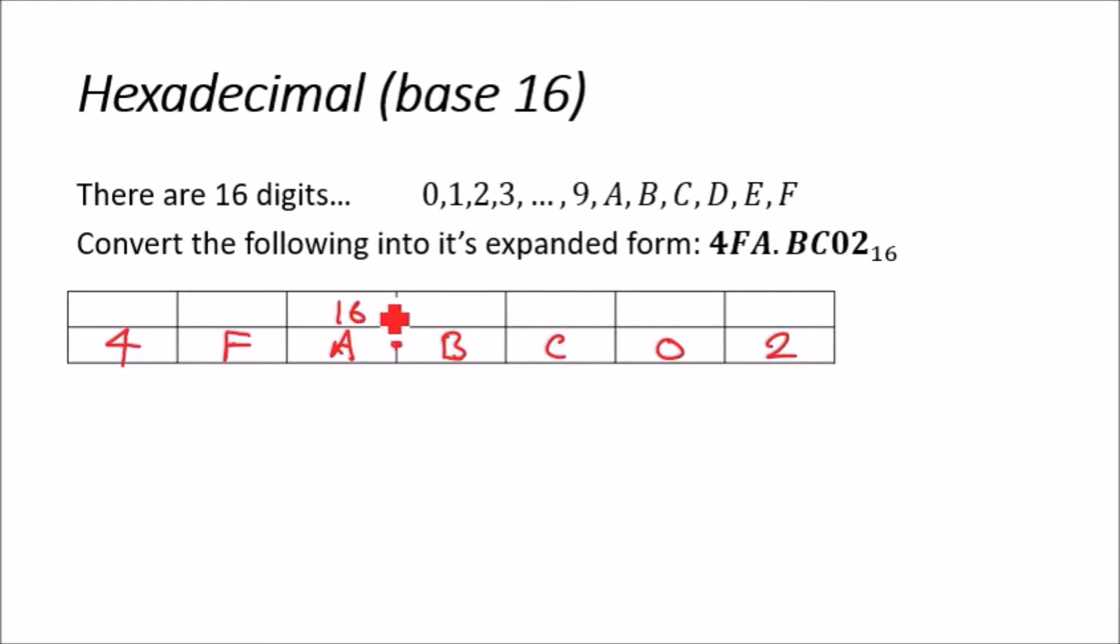...would be 16 to the power of, firstly, 0, then 16 to the power 1, and 16 to the power 2. It's that easy. Then going backwards: 16 to the negative 1, negative 2, negative 3, and negative 4.